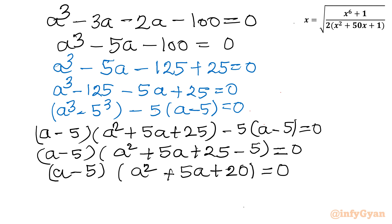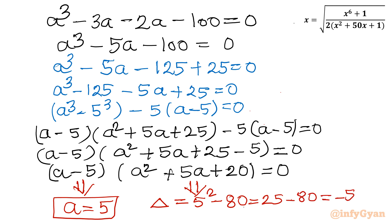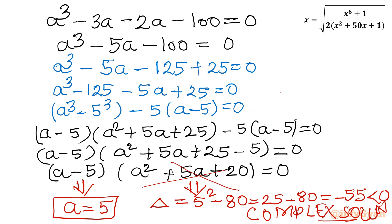From (a - 5) = 0 we get a = 5. From the quadratic a² + 5a + 20 = 0, the discriminant is b² - 4ac = 25 - 80 = -55. Since the discriminant is negative, this quadratic yields only complex solutions, so we reject it.